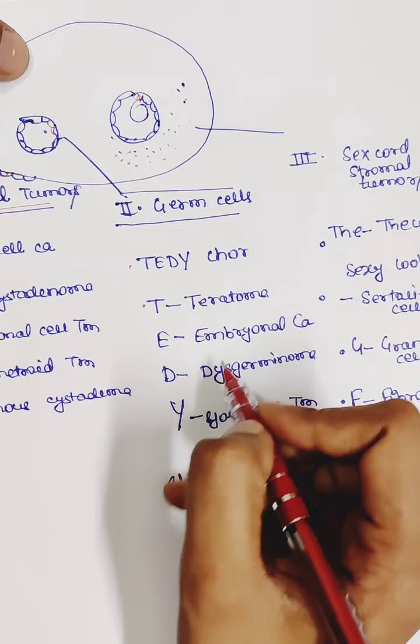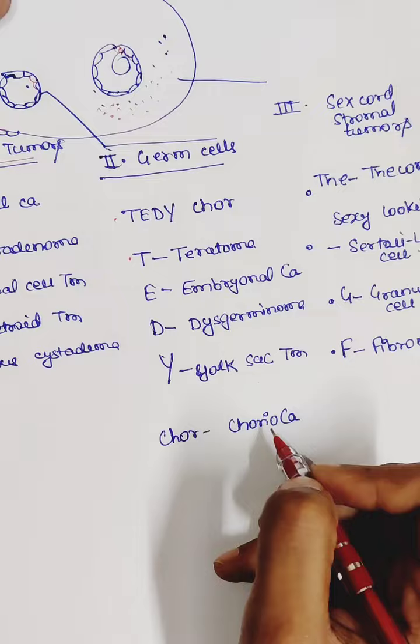E for embryonal carcinoma. D for dysgerminoma. And Y for yolk sac tumor. Chore for choriocarcinoma. So TEDDY CHORE occurs in germ cell tumors.